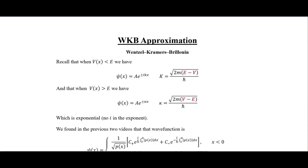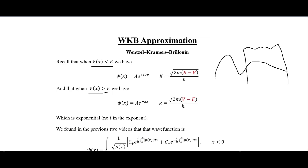In this video I'm going to finish up our discussion on the WKB approximation. In the previous videos we looked at where the potential is less than the energy of the particle, and where the potential is greater than the energy of the particle. We can think of a potential that looks like this, where we have a particle coming in with a wave function that decays and becomes smaller on the other side.